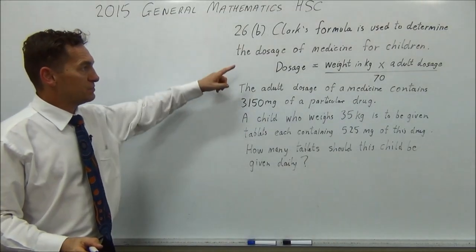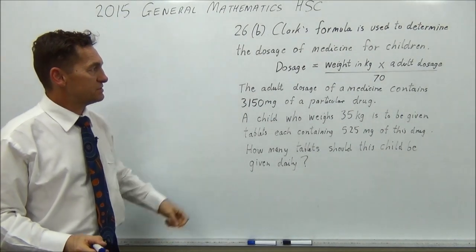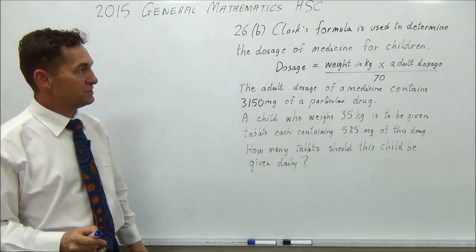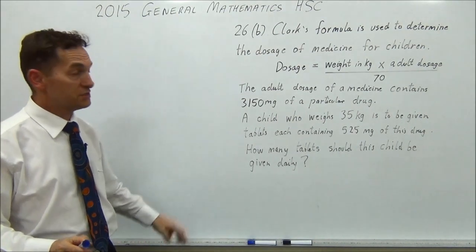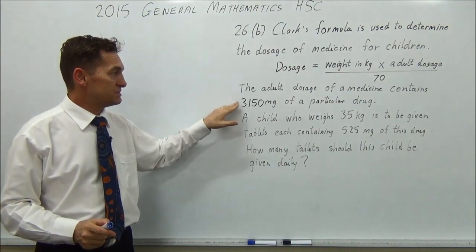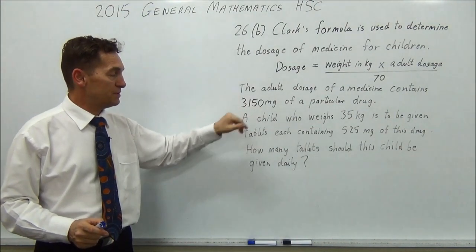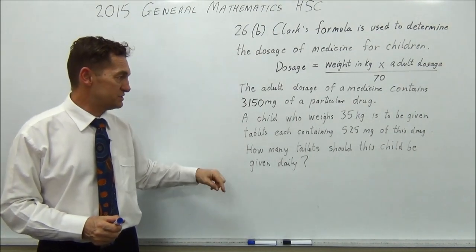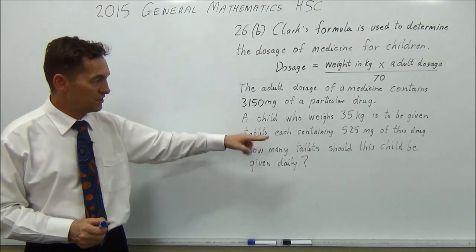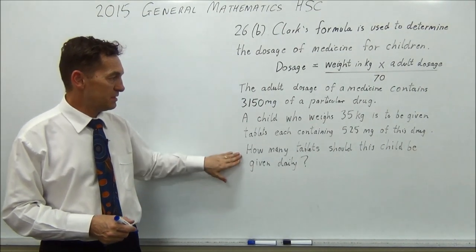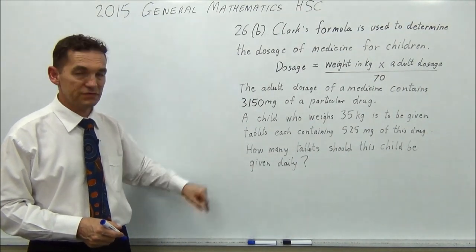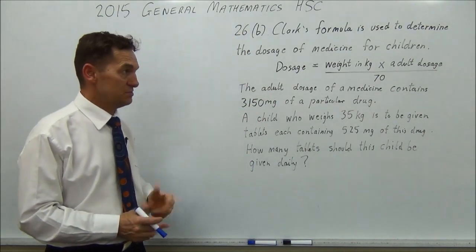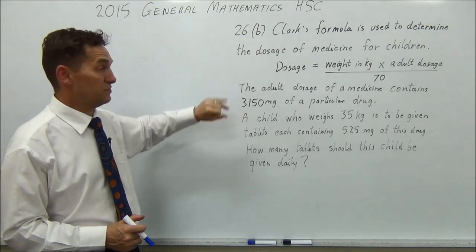26B. Clarke's formula is used to determine the dosage of medicine for children. I'll give you this formula. Dosage equals weight in kilograms times adult dosage divided by 70. The adult dosage of medicine contains 3150 milligrams of a particular drug. A child who weighs 35 kilograms is to be given tablets, each containing 525 milligrams of this drug. How many tablets should this child be given daily? A lot of words, but the question's actually not too difficult. It's just a lot of words for you to read through.